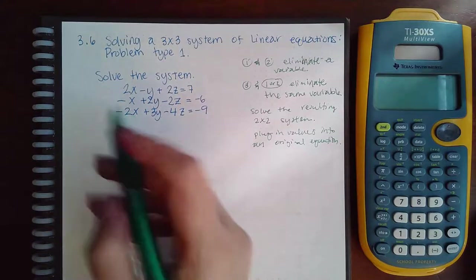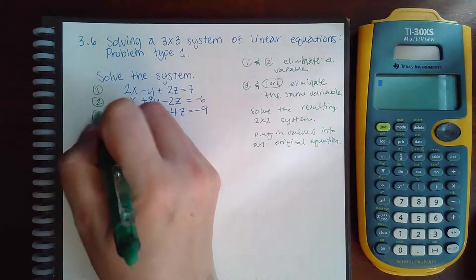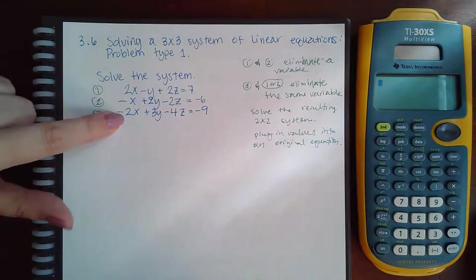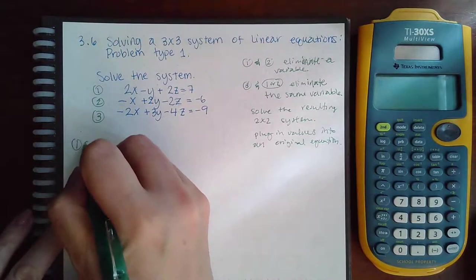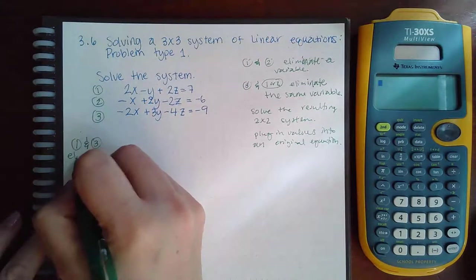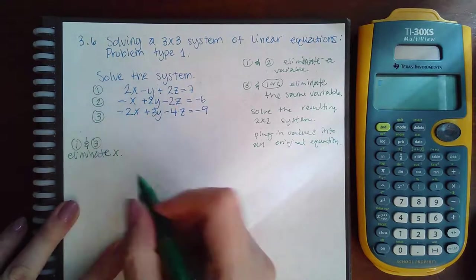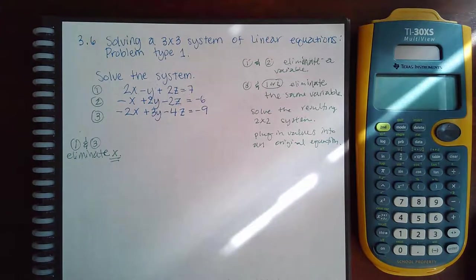So let's go ahead and take a look at these. So what I'm going to do is I'm going to put 1, this is 1, this is 2, this is 3. Because I noticed that 1 and 3 can cancel out the x right away, I'm going to combine 1 and 3, and I'm going to eliminate x. That's important to know which one you're eliminating, because when you pick the second one and another equation, you have to eliminate the same variable.